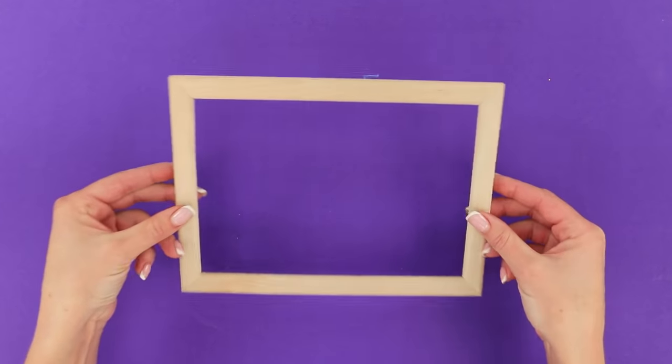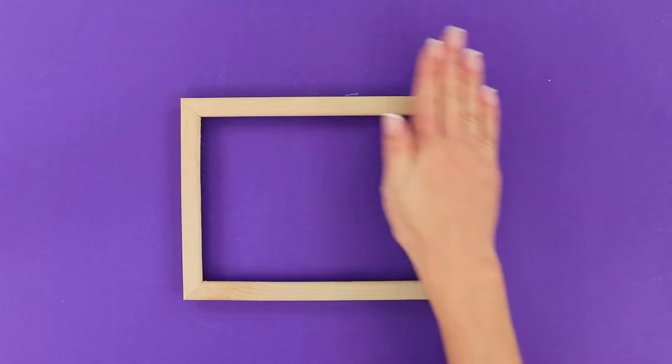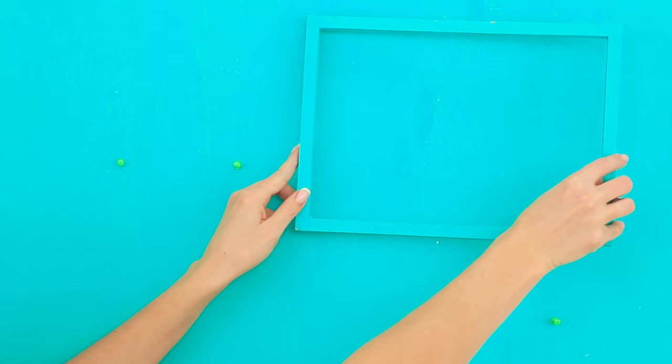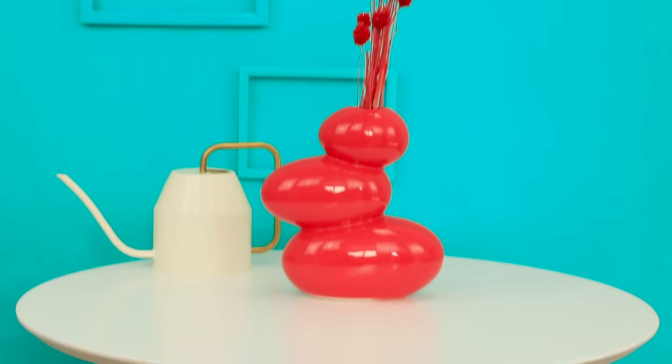For another idea, paint the wall turquoise. Now, you need some picture frames. Paint them the same color as the walls. Fasten frames of different sizes to the wall without any pictures or drawings. Just the frames matching the wall.